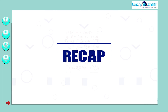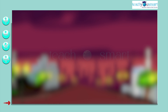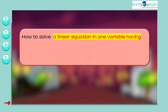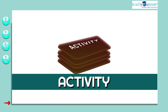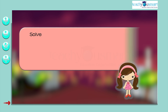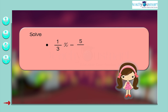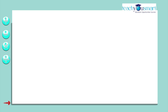Let's have a quick recap. Today we discussed how to solve a linear equation in one variable having a linear expression on one side and numbers on the other side, with some examples. Before winding up, let's check how much you understood by doing an activity. Solve: (1/3)x - 5/2 = 6, and x/5 + 11 = 1/15.